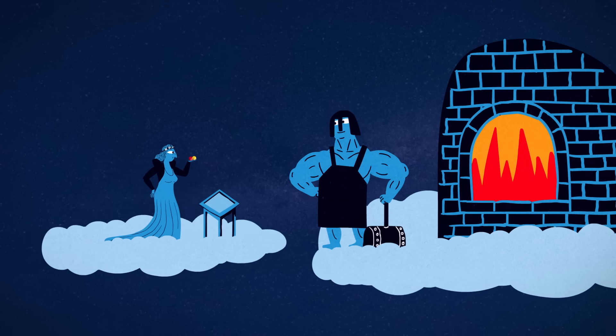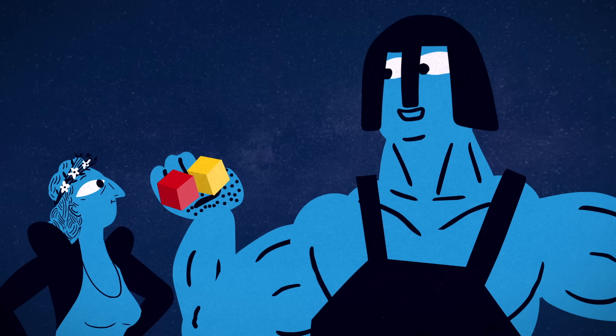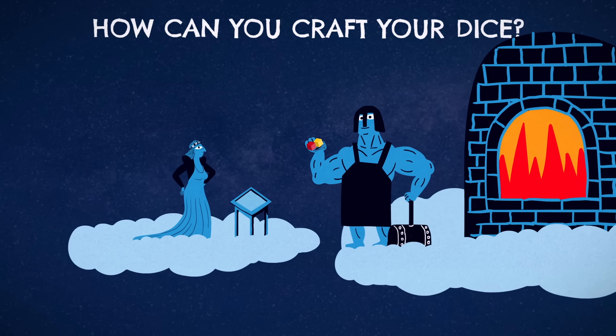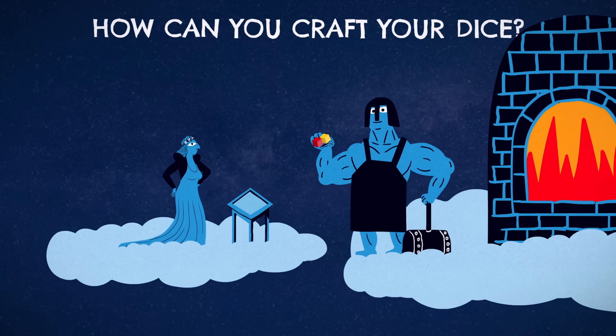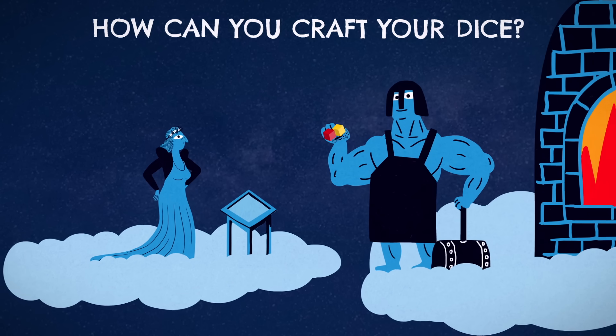You can use Hephaestus' furnace to seal the dots in place before the sun rises, but once sealed, you can't move or remove them again. How can you craft your dice so that, when rolled and summed, every total comes up with the exact same frequency as it would with standard six-sided dice?